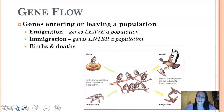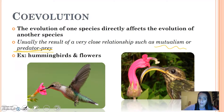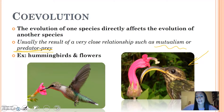Co-evolution is the evolution of one species directly affecting the evolution of another. This is typically a mutualistic relationship or a predator-prey relationship, such as hummingbirds and flowers. If you look at the beaks of these hummingbirds, over time that beak has evolved to fit the shape of the flower. This goes back to natural selection — hummingbirds with straight beaks weren't as successful getting nectar, while those with a curved beak due to mutation were able to pass on their genes.